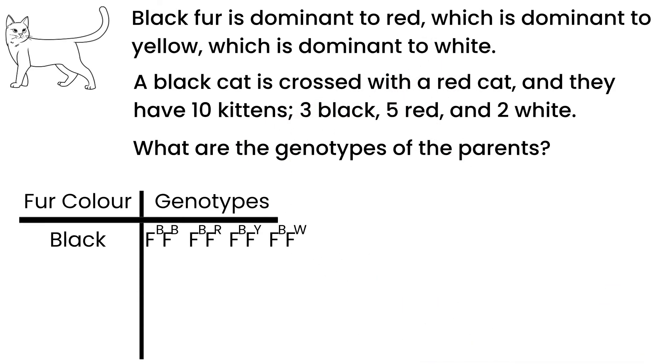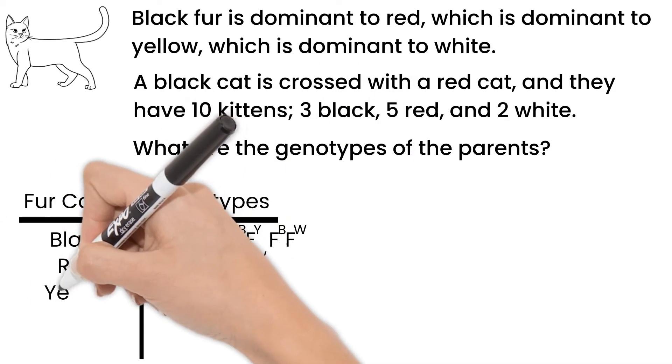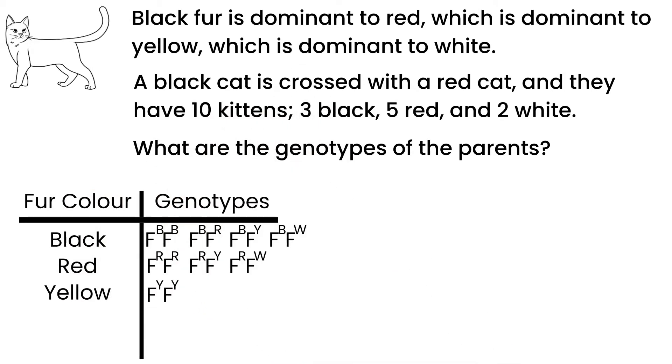For red fur, the cat could be homozygous red or heterozygous with the alleles it is dominant over: yellow and white. For yellow fur, the cat could be homozygous yellow or heterozygous with a white allele. White is recessive to all the other colors, so for white fur, the cat has to be homozygous white. Because the parent cats were black and red, they could be any of these possible genotypes.